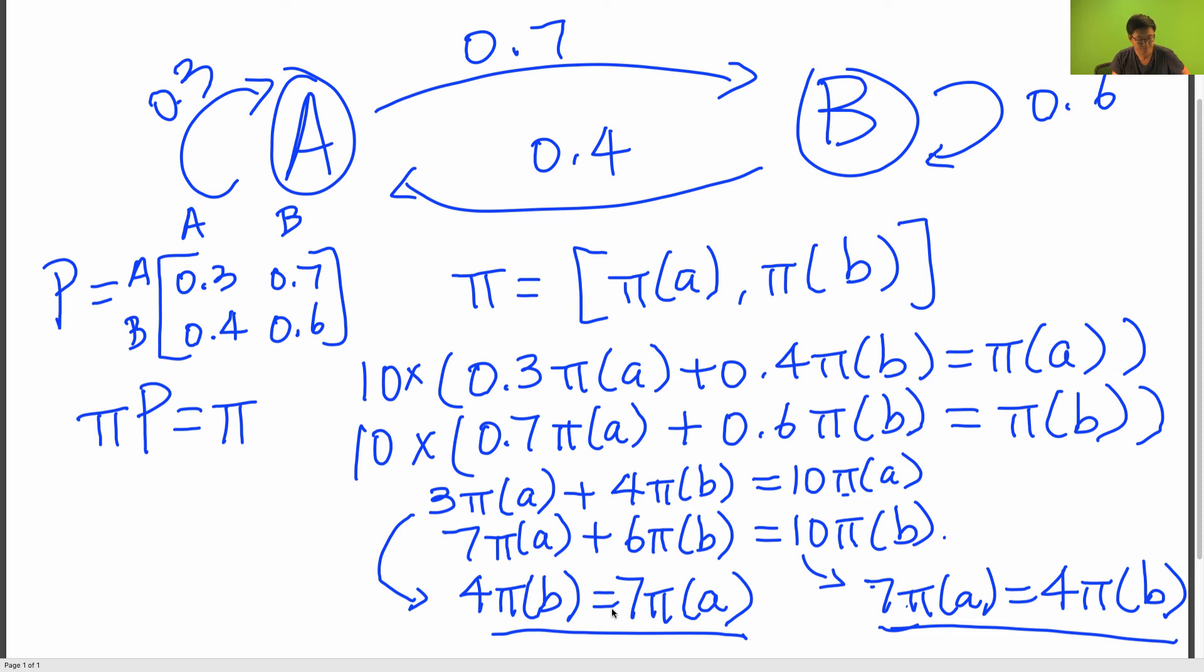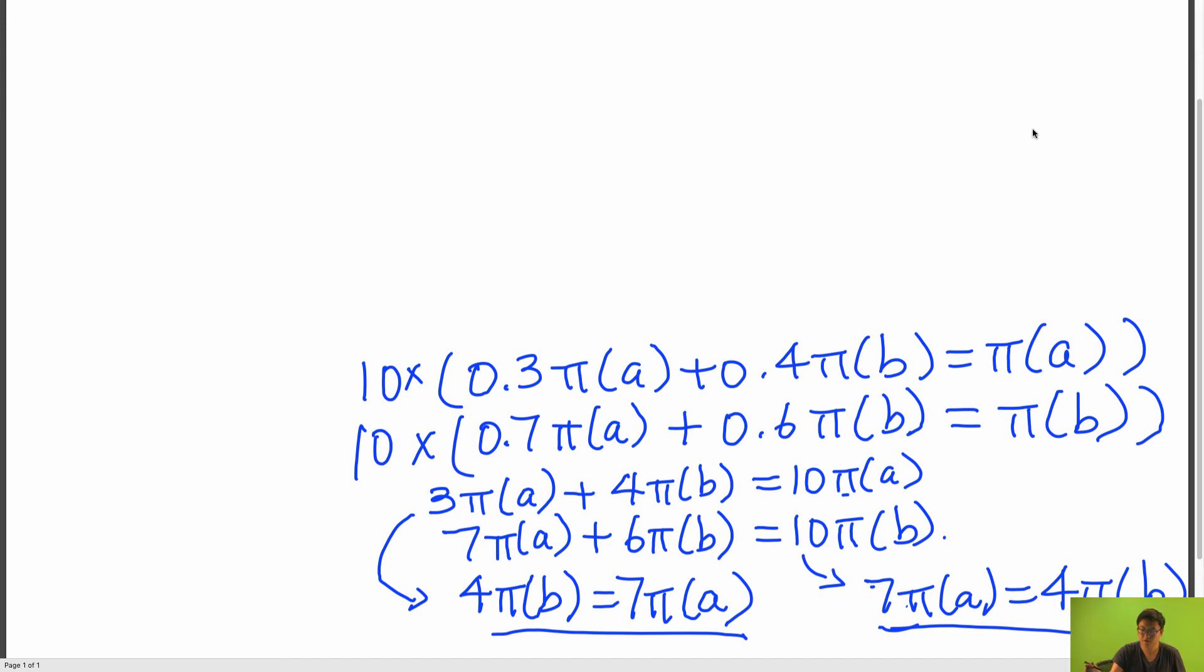So what do we do? I'm going to erase this Markov chain so I have more room to work with. So what do we know about the elements in pi?